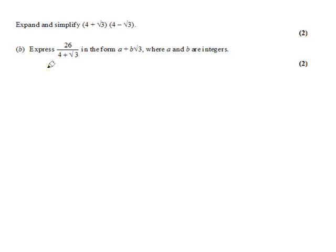This is an exam question. First thing to notice is they're guiding us through. They're actually encouraging us to form the difference of two squares and we'll then use that to rationalize the denominator in part B. So, firstly, difference of two squares here, 16 take away 3. So it should be 13.